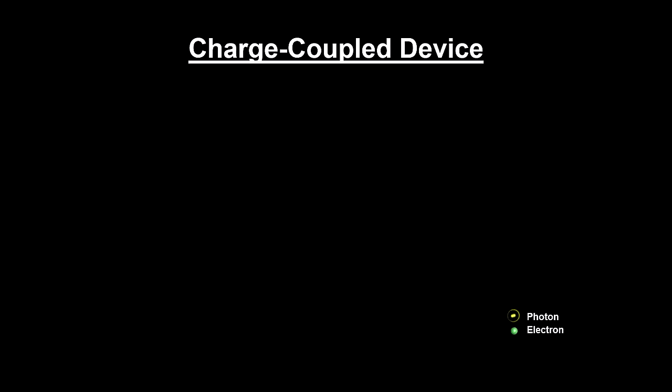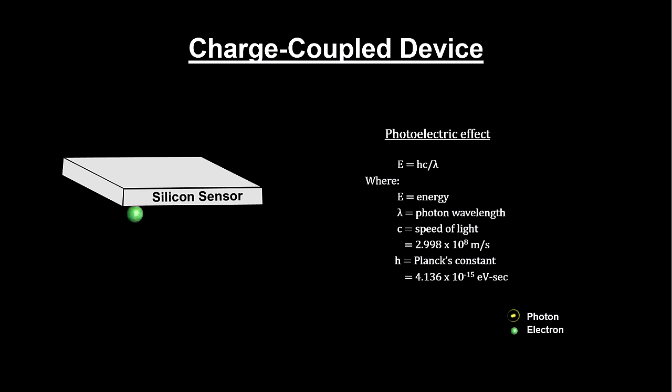Here's how they work. CCDs are based on a principle called the photoelectric effect. If a photon with sufficient energy hits an electron in the outer shell of an atom, the transfer of energy to the electron can be enough to free it from the atom altogether. This is a fundamental component of quantum mechanics, first analyzed by Albert Einstein in 1905.